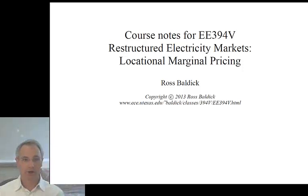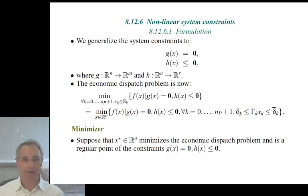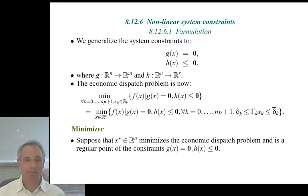In this section of locational marginal pricing, we're going to consider non-linear system constraints. We'll generalize the system constraints to G(x) equal to zero and H(x) less than or equal to zero, where in general G and H could be non-linear.